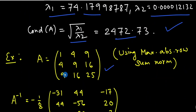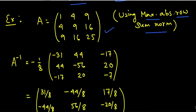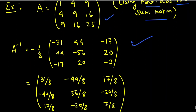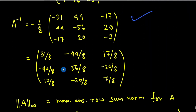Example 2: Given a matrix A = [1, 4, 9; 4, 9, 16; 9, 16, 25], we have to find the condition number using the maximum absolute row sum norm, that is the infinity norm. The inverse A inverse equals −(1/8) times a certain matrix, which we can write out element by element as 31/8, −44/8, and so on.